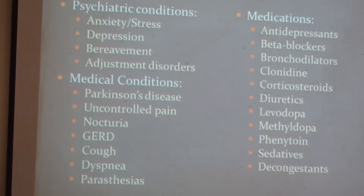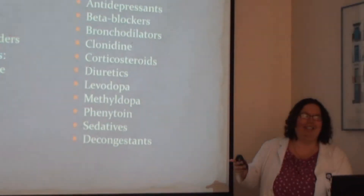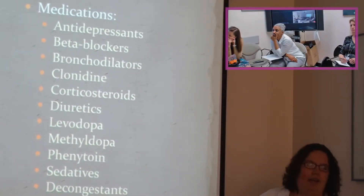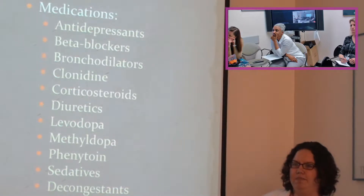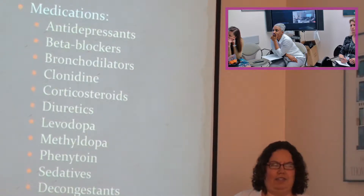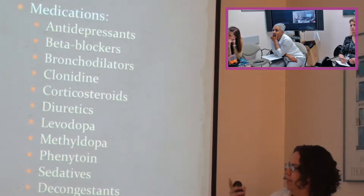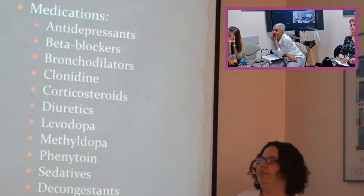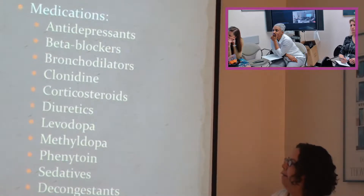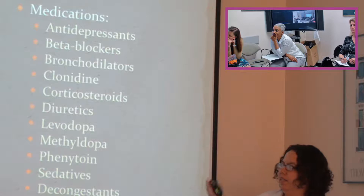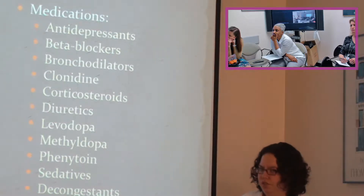On the medication side, there's a lot on this list. Some you just can't get rid of — if somebody needs diuretics to breathe, you have two conflicting issues. Methyldopa and levodopa in someone with Parkinson's: you want to treat the Parkinson's, but the medicine itself can worsen insomnia. The best approach is to minimize medications where possible and treat underlying conditions to try to improve sleep overall.